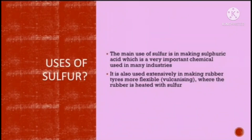What are the uses of sulfur? The main use is making sulfuric acid, which is a very important chemical used in many industries. It can also be used extensively in making rubber tires more flexible, which is known as vulcanization — where rubber is heated with sulfur to make it more flexible.